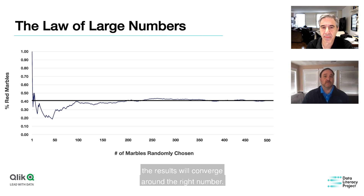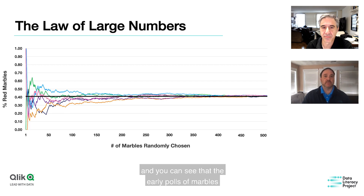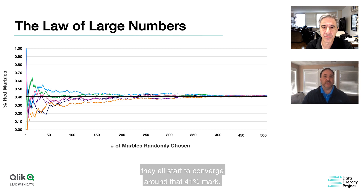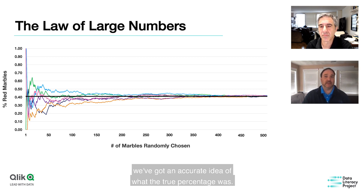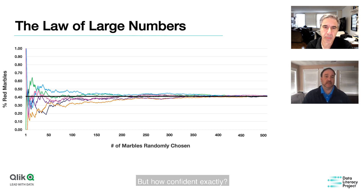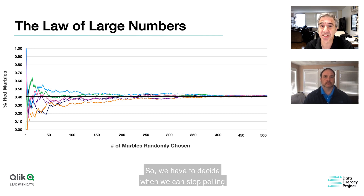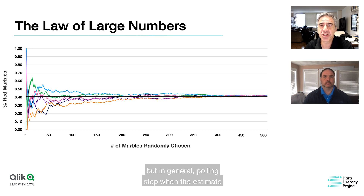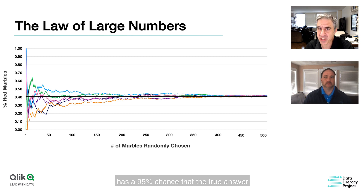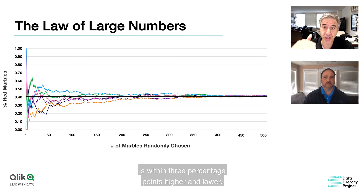The further you go, the results will converge around the right number. We ran the simulation a few more times and saw that early pulls were scattered, but toward 400 marbles they all converge around that 41% mark — only 400 out of 300 million. Polling is really expensive, so we have to decide when to stop and still feel confident. Pollers generally stop when the estimate has a 95% chance that the true answer is within plus or minus three percentage points.